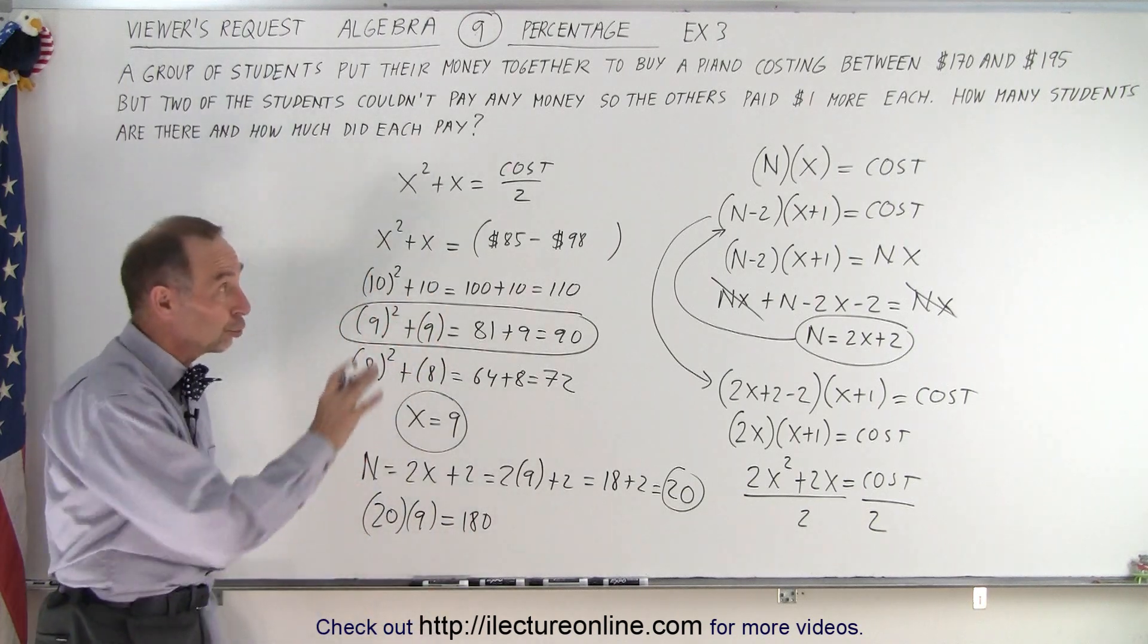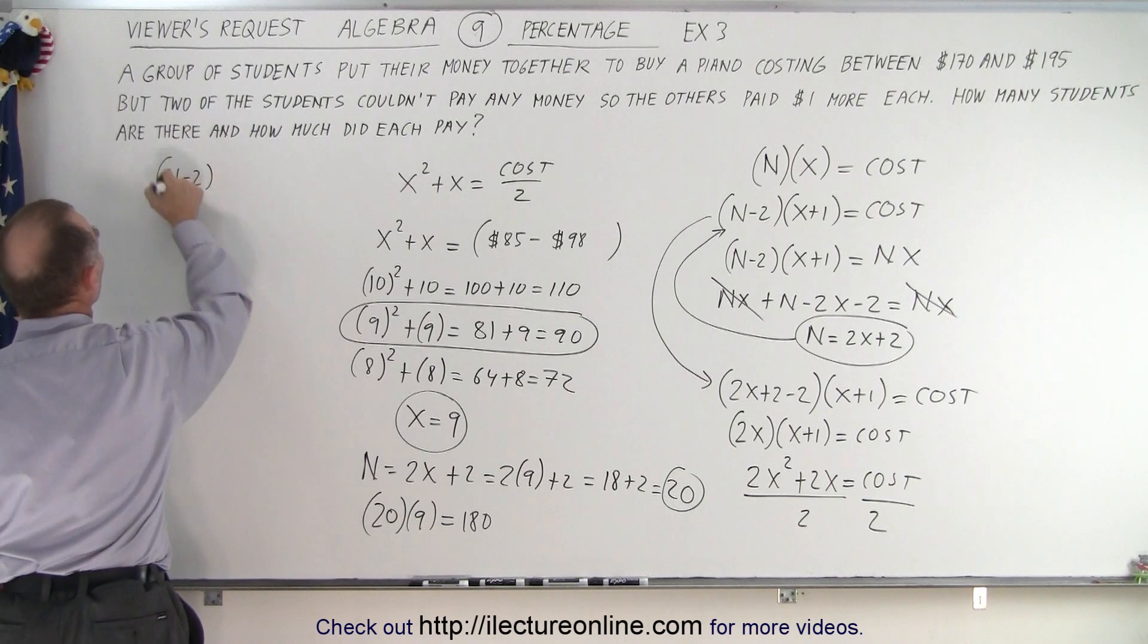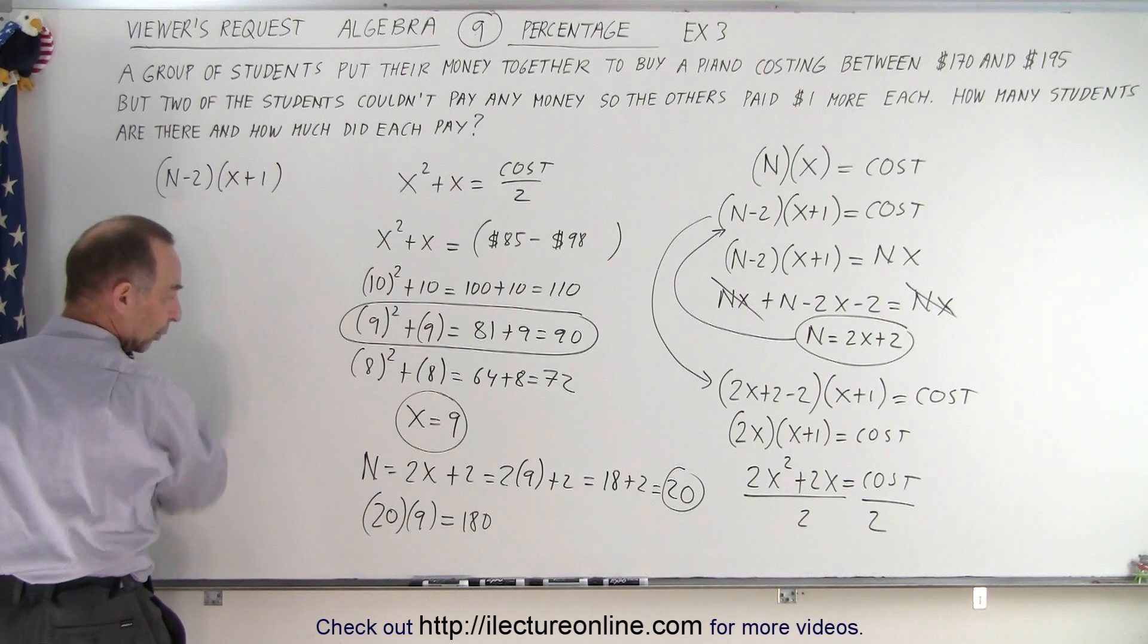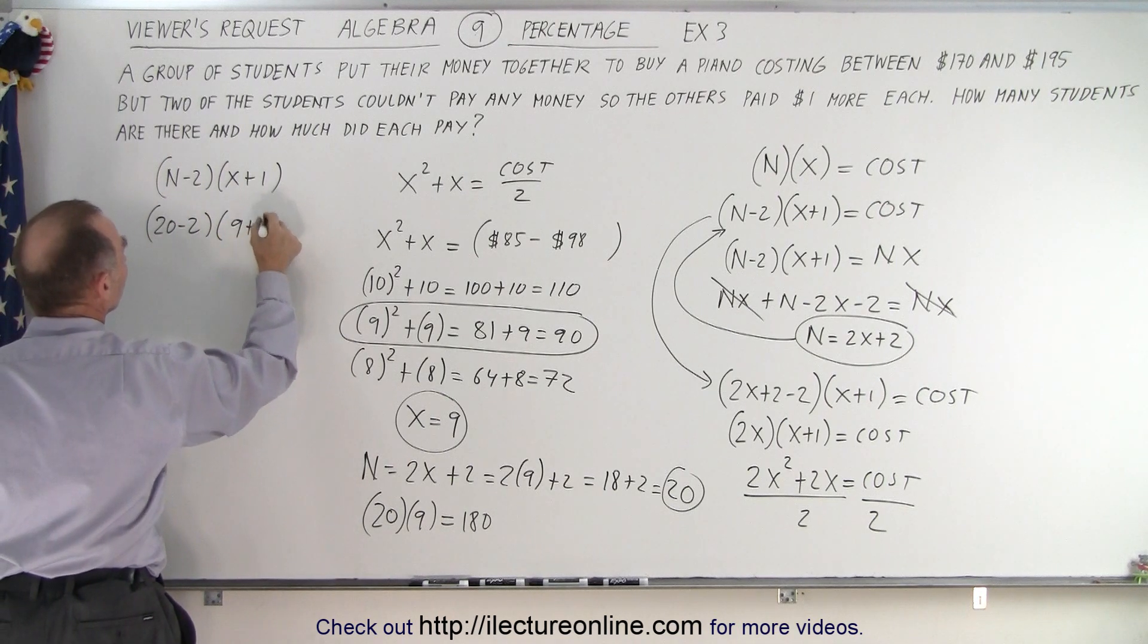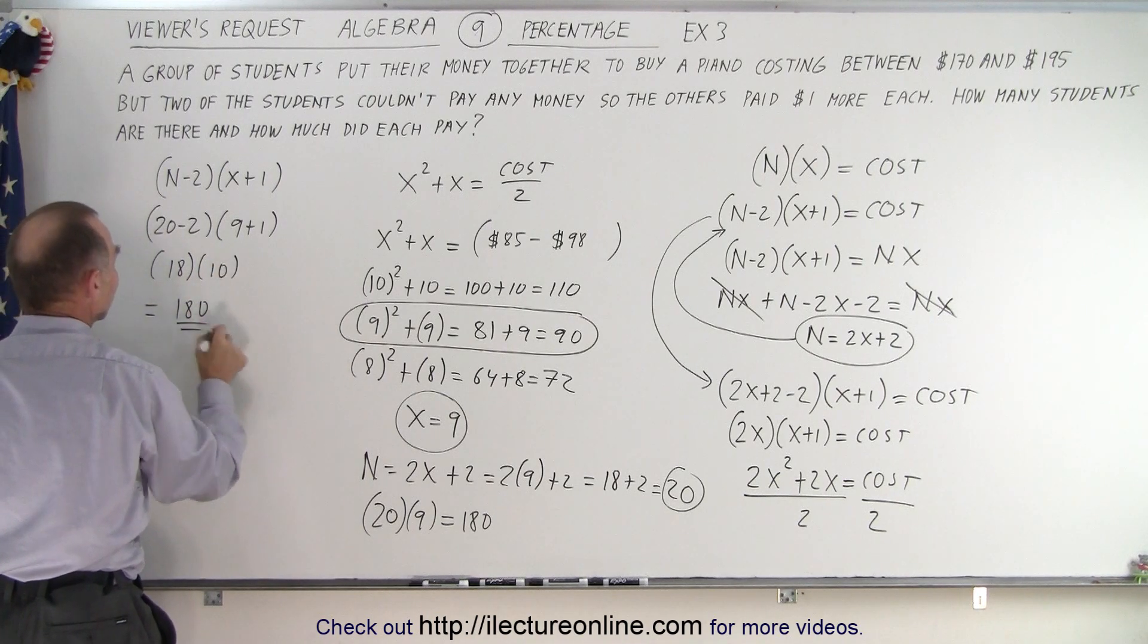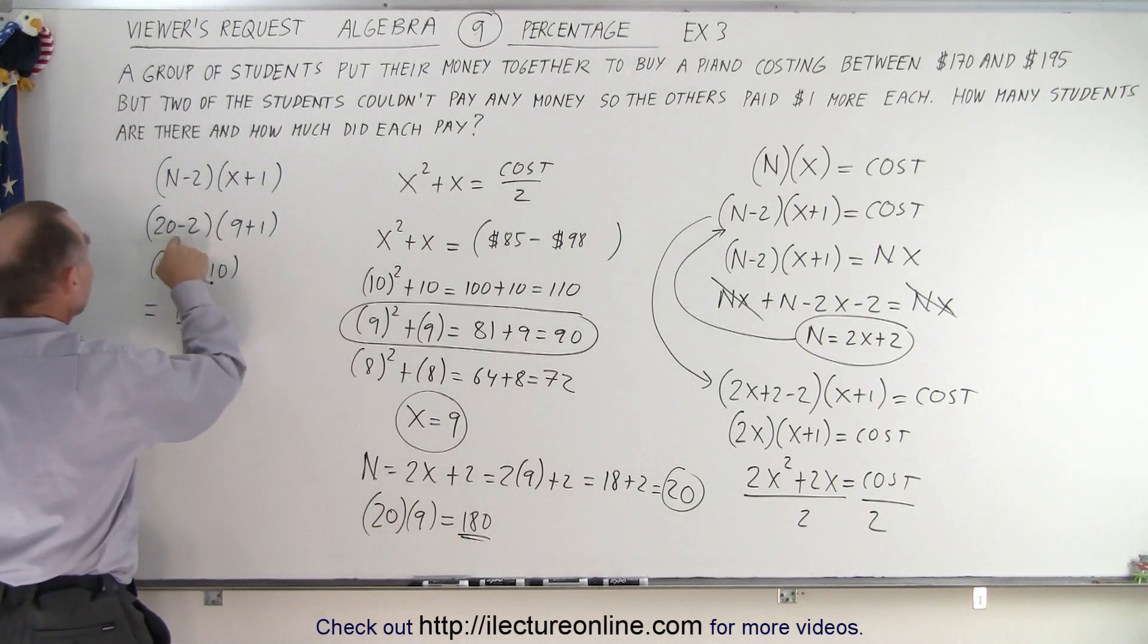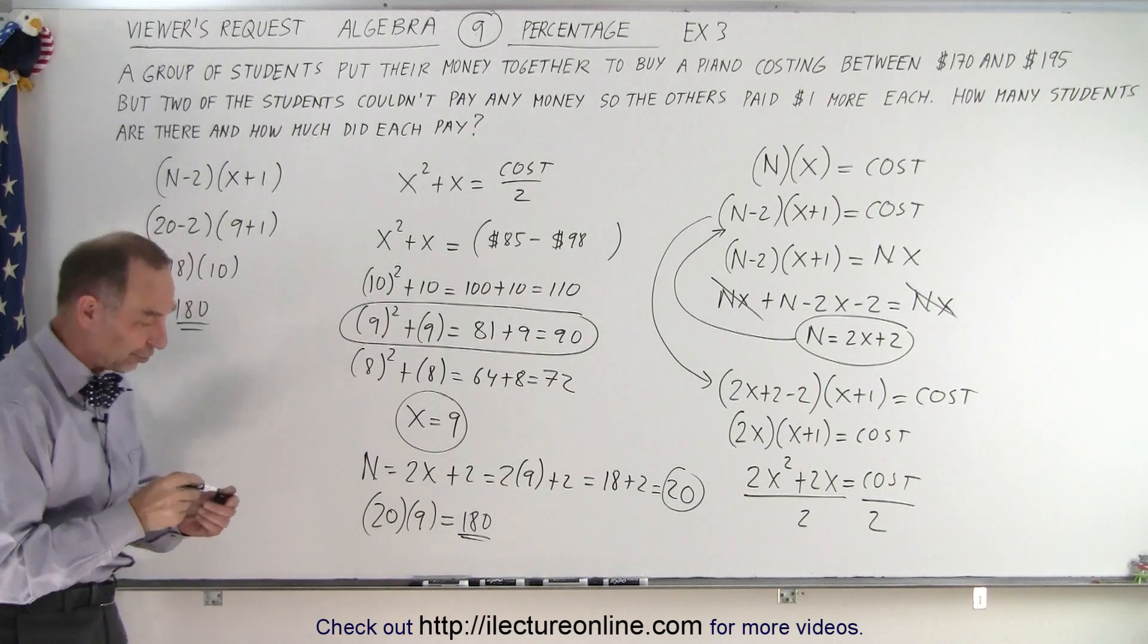Now let's see if that works for 2 less paying $1 more. So now we have (n-2) times (x+1), and n = 20, so now we have 20 - 2 each paying x which is 9 + 1. So that would be 18 times 10 which is also 180. So you can see that you get the same value if you had 20 students paying $9 or 18 students paying $10, you end up with the same money of $180 for the piano.